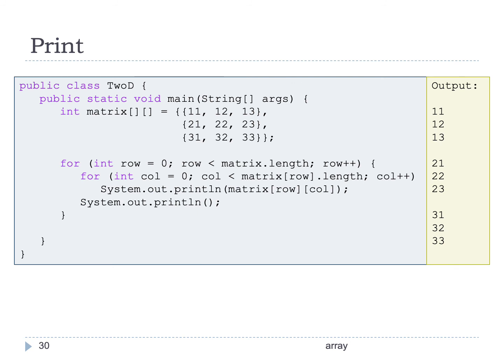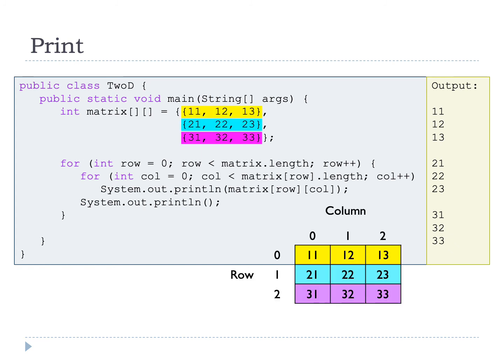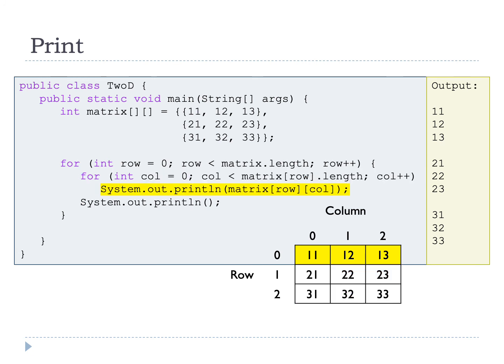Let's look at an example on how to display the values of a two-dimensional array. We have a 2D array called matrix. The first row has values 11, 12, and 13 — so 11 is at row 0 column 0, 12 is at row 0 column 1, and 13 is at row 0 column 2. The same goes for the second and third rows. The values for each row and column are shown in a table. In the for loop, the outer loop checks the rows and the inner loop checks the columns for each row — going through row 0 column 0, column 1, column 2, then row 1 and row 2.